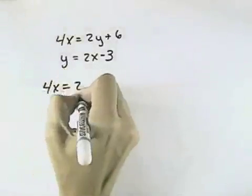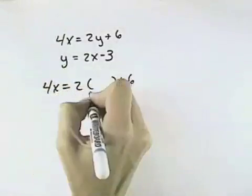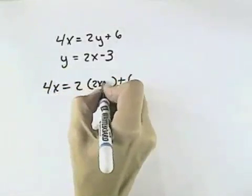So in my first equation, I'm going to take out the y, and I'm going to replace it with the second equation where y equals 2x minus 3.